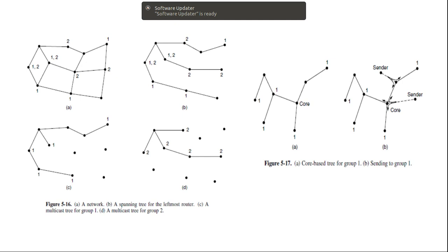Packets are forwarded only along the spanning tree, which is more efficient than the broadcast tree because there are 7 links instead of 10.